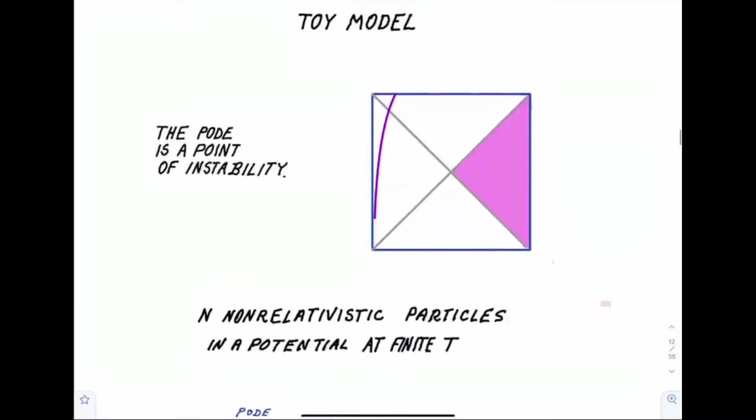First of all, the pod is a point of instability. What I mean by that is that if you had a particle or an object, a galaxy or whatever it happens to be, which was slightly displaced from the pod, and you allowed it to evolve, it would eventually fall through the horizon.